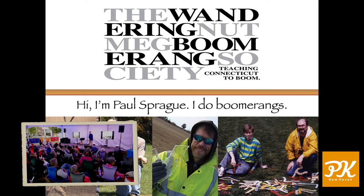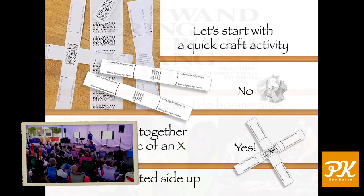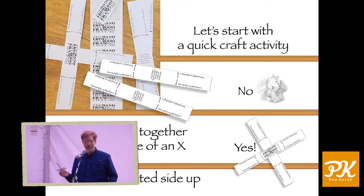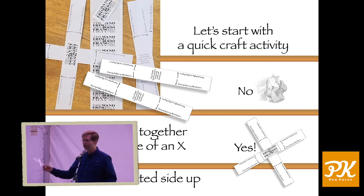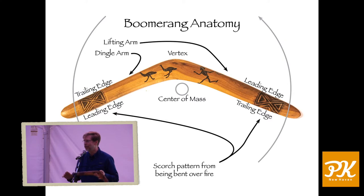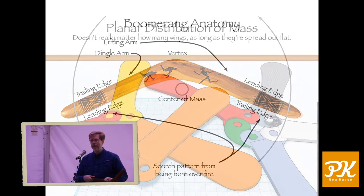My name is Paul Sprague. I'm with the Wandering Nutmeg Boomerang Society. In six minutes, if I'm successful, you're going to turn to the person next to you and say, 'I've just caught my first boomerang.' We're passing out materials — take two pieces, stick them together into an axe shape like this. Now I know what you're thinking: this doesn't look like a boomerang. But this does — this is from New South Wales, built about 1950. What makes it a boomerang? It's got two wings and some aerodynamics happening. When I throw this, it goes out about 50 meters and comes back. That makes it a boomerang.